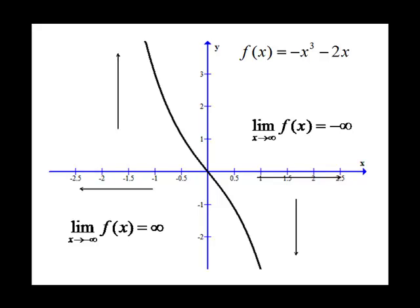When the coefficient on the x cubed term is positive, we saw that as x goes to positive infinity, so do the y values. When the coefficient is negative, as x goes to positive infinity, the y values go to negative infinity. That will always be true for cubics.